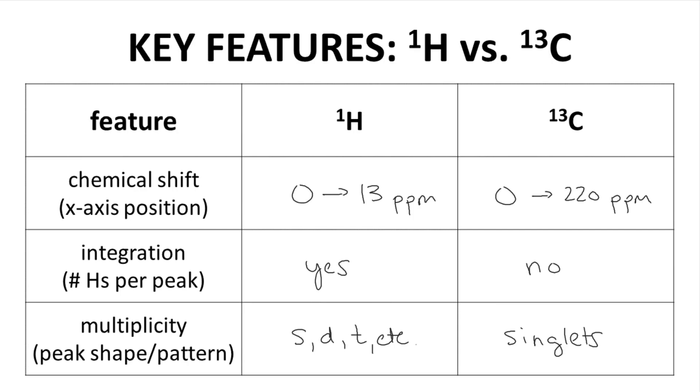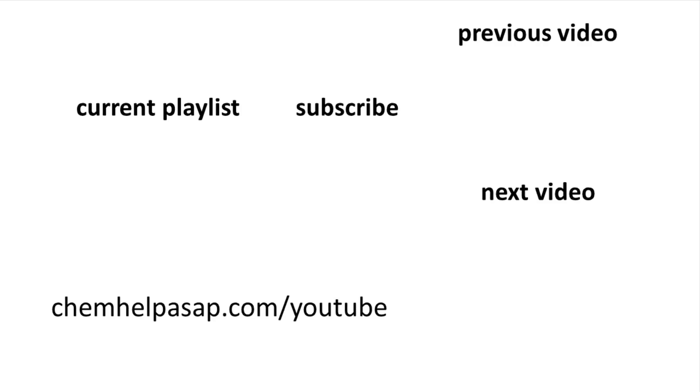So, as you can see from these three features, proton NMR and C13 NMR are not the same. Yes, there are similarities, but there are also differences. I will note that many students feel it is relatively easy to jump from proton NMR to C13 NMR because C13 NMR does have fewer features to interpret since integration, and especially multiplicity, are not part of the discussion. So that was a quick review of how chemical shift, integration, and multiplicity are relevant or not for proton and C13 NMR.